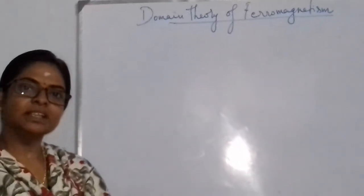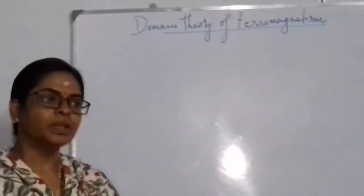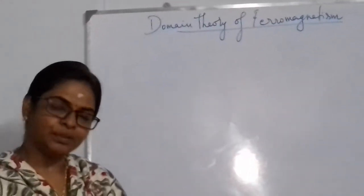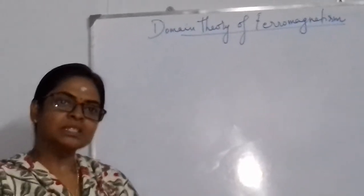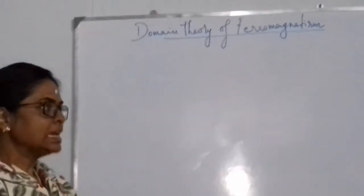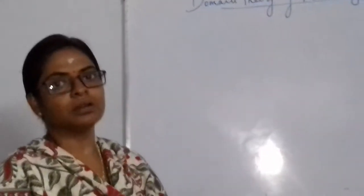Good morning. In this video we will see the domain theory of ferromagnetism. We know how a ferromagnetic material will behave with respect to the applied field and temperature. One of the most important characteristics of ferromagnetism is the hysteresis curve. Hysteresis is nothing but the lagging behind of one property with respect to the other — here, the magnetization inside the material lags behind the external magnetic field. That lagging property is called hysteresis, and because of it we get a hysteresis loop.